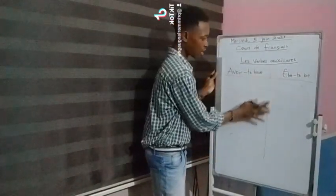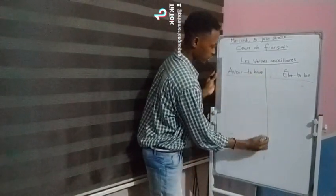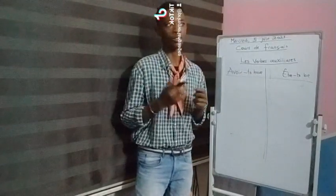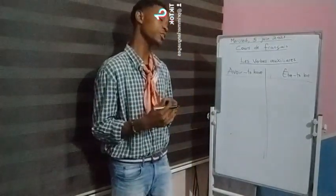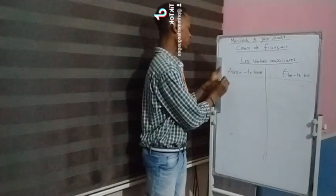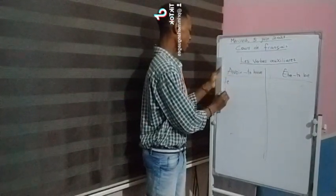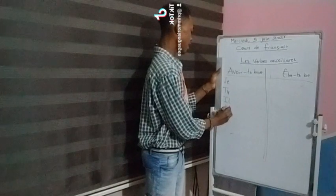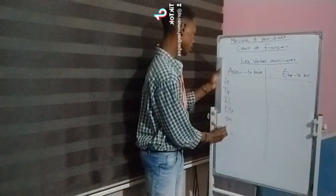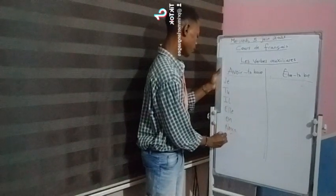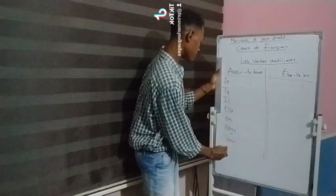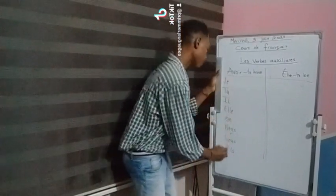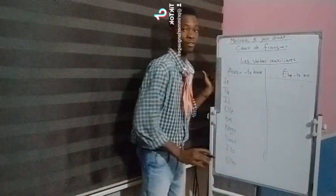I'm going to walk you through how to conjugate these verbs in the present tense. The first thing we need to do is write out our pronouns. The pronouns from the first person: je, which means I; tu, you (informal); il, he; elle, she; on, we (informal); nous, we (formal); vous, you (formal); ils, they (masculine and mix of genders); and lastly, elles (feminine).